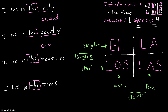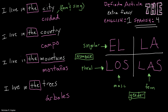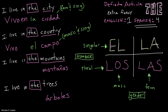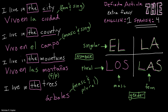Our nouns are: city — ciudad — campo for country, montañas, and árboles. Ciudad is feminine and singular, which means we need la: 'Vivo en la ciudad.' Campo is masculine and singular, so we say el campo. Montañas — 'Vivo en las montañas' — because it is feminine. And árboles: the trees, plural, masculine.